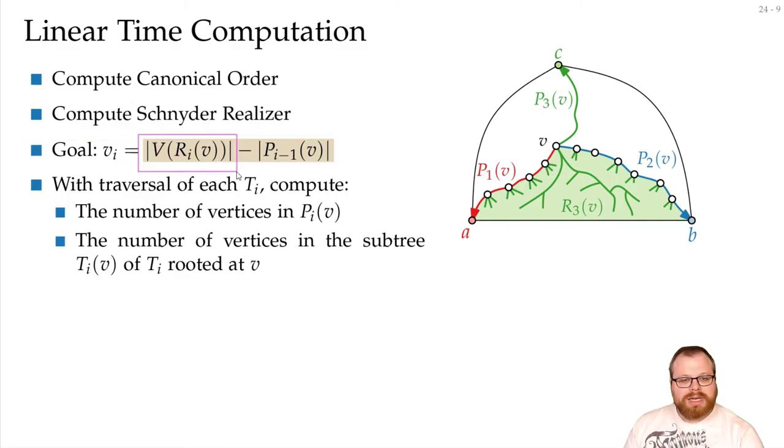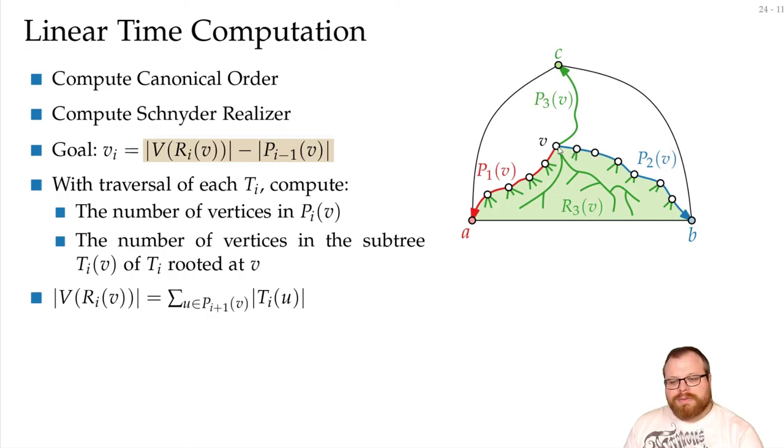So to calculate this number, we have to look at all the vertices on this path and ask how many vertices are in your subtree. Then we ask all the vertices on this path how many vertices are in your subtree. And then we have to remove the vertices in the subtree of v because we counted it twice.